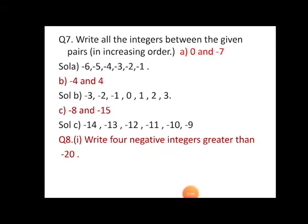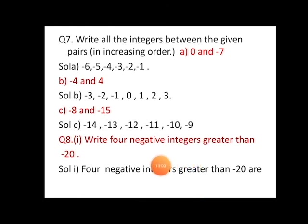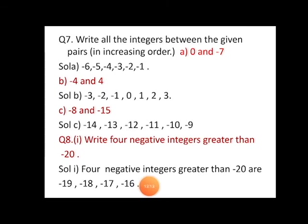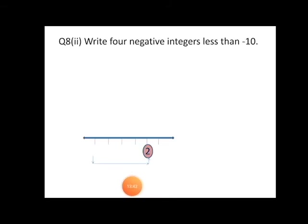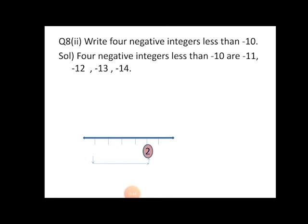Here comes question number eight — we have to write four negative integers greater than minus twenty. Children, four negative integers greater than minus twenty are: minus nineteen, minus eighteen, minus seventeen, and minus sixteen. As discussed, negative numbers closer to zero represent greater value compared to those farther from zero, so minus sixteen through minus nineteen are all greater than minus twenty.